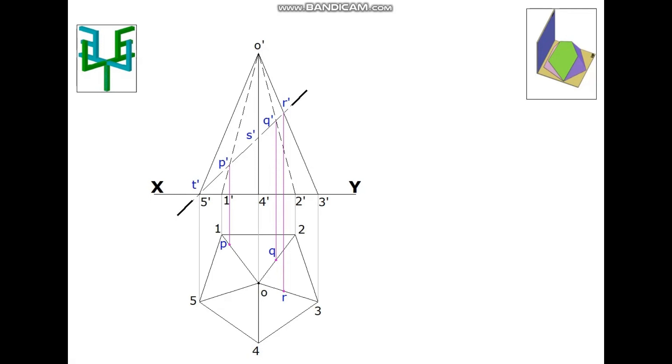S' cannot project directly. Project it horizontally to meet the 3'O' line. Then project that point vertically to meet 3'O' line. From O' as center, transfer that point to 4'O' line. This point is S' on the 4'O' line.